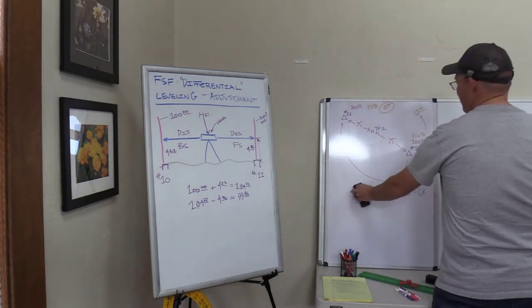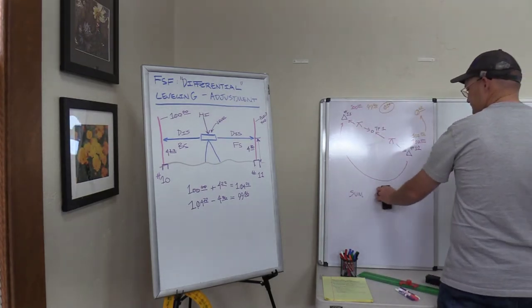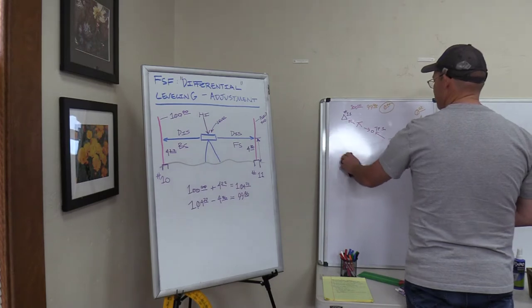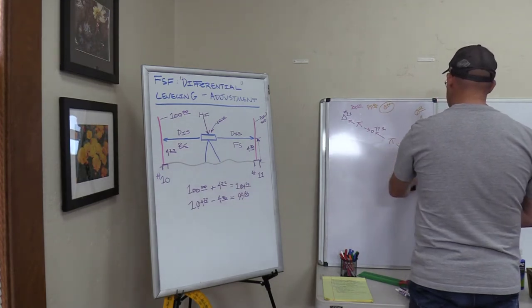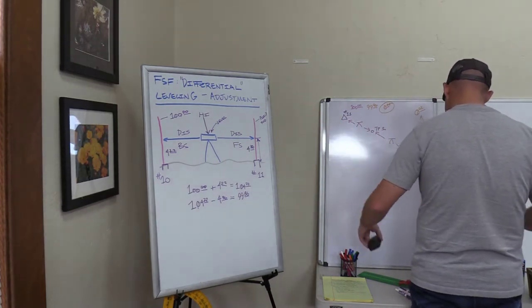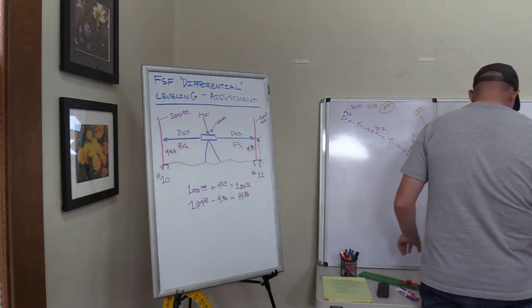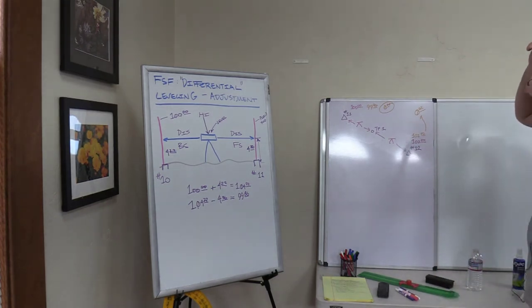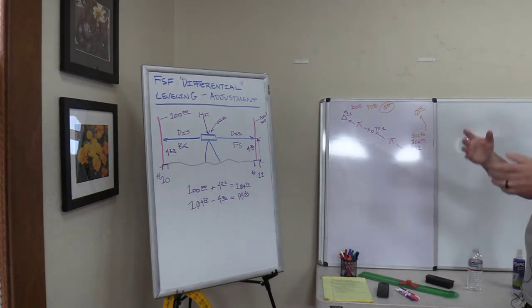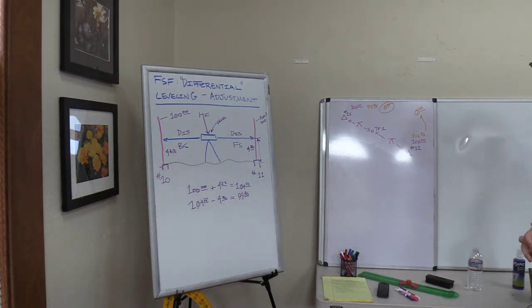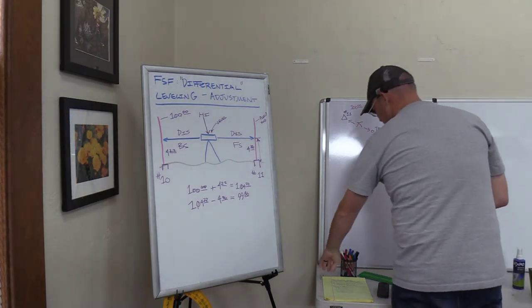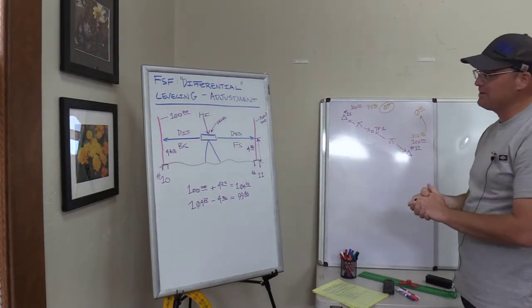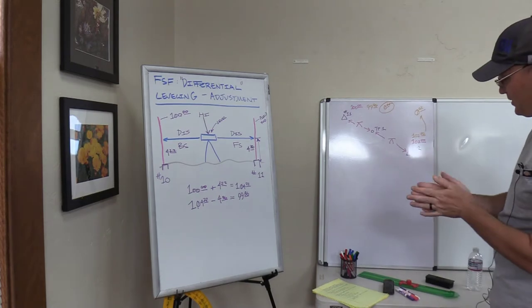So let's say we've identified that we have an error. What are some different ways that we can adjust it — spread it out, kind of balance it out? Before we figure out which method we want to use, let's talk about the different error sources in a differential leveling survey.